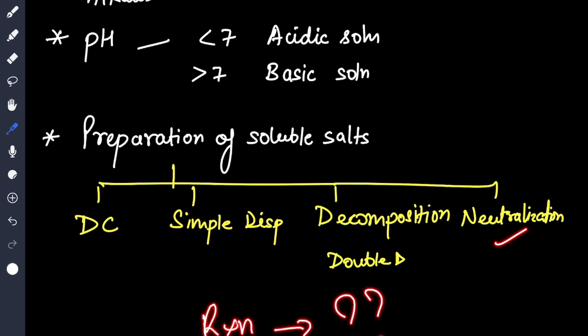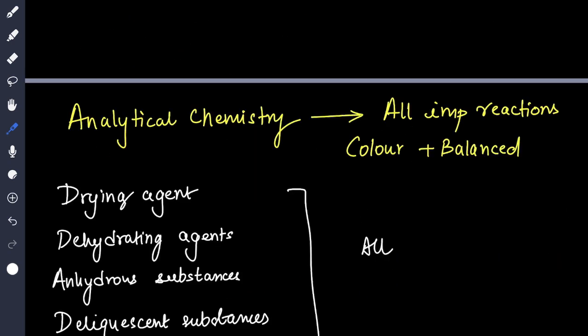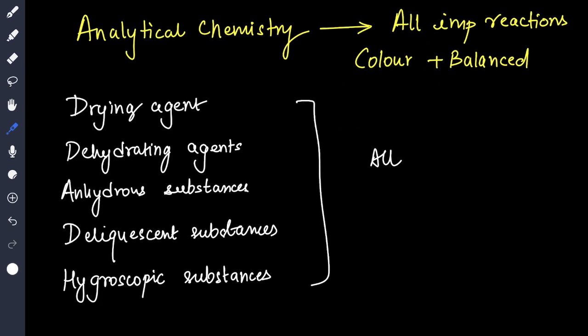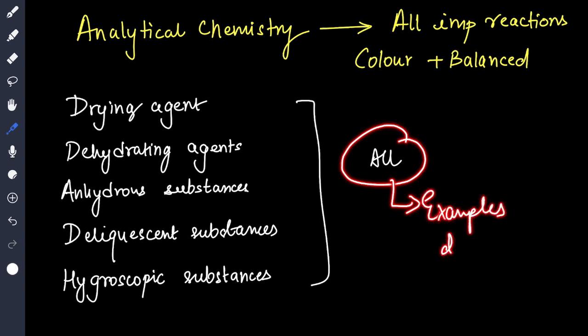For analytical chemistry you have to do all the reactions and learn all the colors. Then drying agent, dehydrating agents, anhydrous substance, deliquescent substance, hygroscopic substance. You have to learn the examples and the definitions of all these.